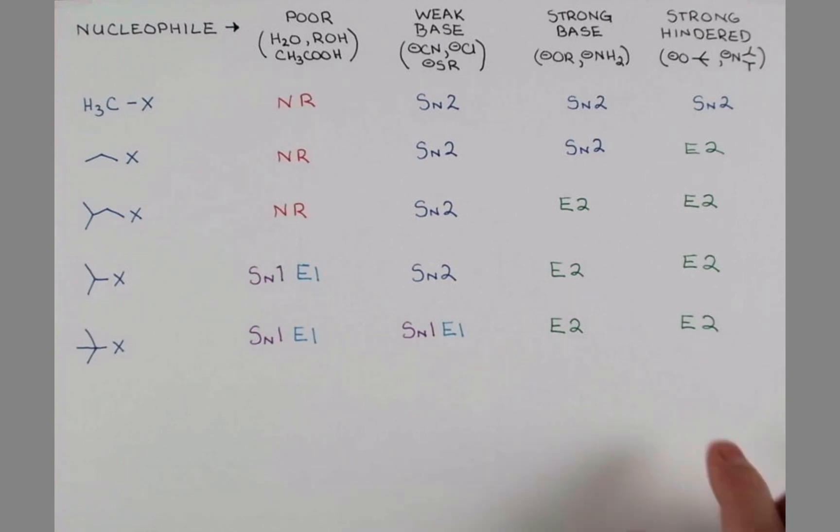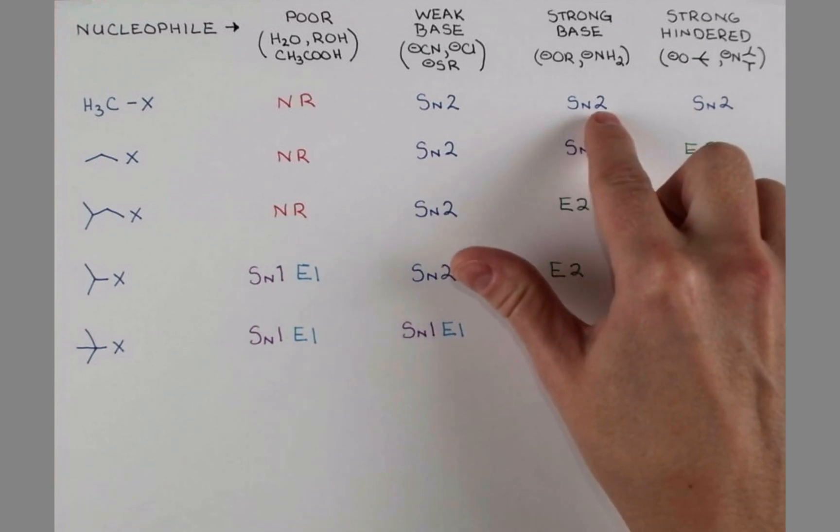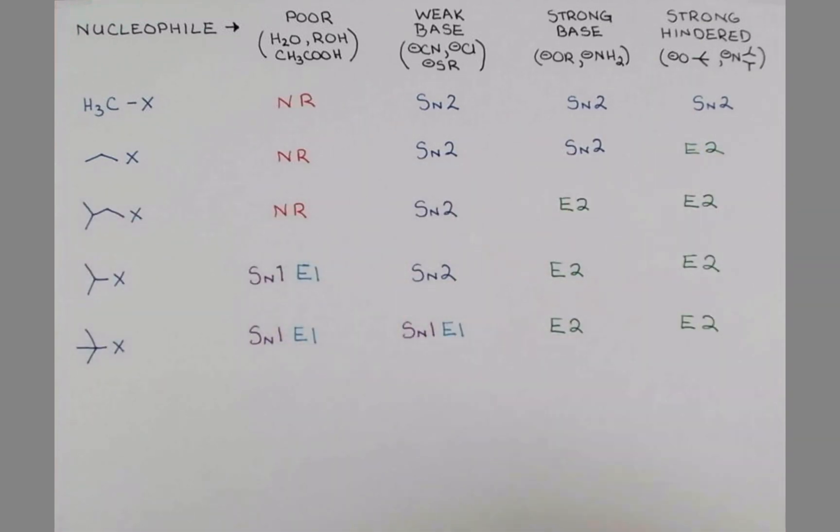Our strong bases and strong hindered bases are promoting E2 reactions, except when that mechanism is not available, and when this primary substrate is completely unhindered with the strong base. I hope this video is helping you start to cope with all of these competing mechanisms, and start to see that there actually are general trends based on our substrate and our nucleophile strength and properties.